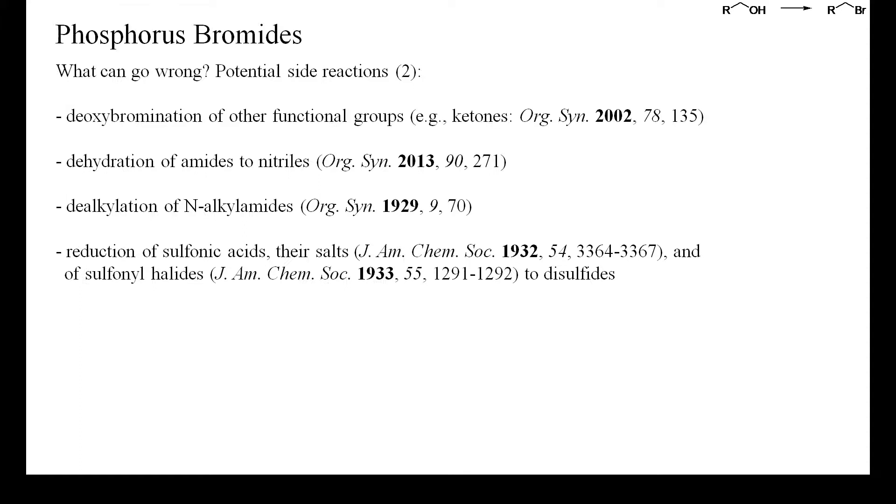Trivalent phosphorus derivatives are strong reducing agents and can reduce various functional groups. These include sulfonic acids, their salts, and sulfonyl halides. Further groups that are usually reduced by phosphorus tribromide or phosphorus trichloride are amine N-oxides, azides, nitro groups, alpha-halo ketones, and disulfides.